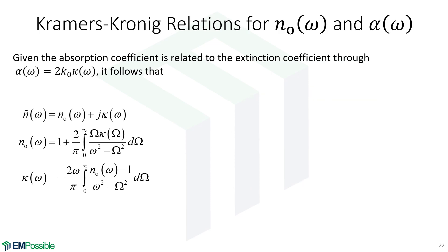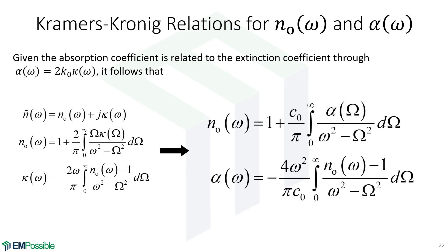What's more common when talking about refractive index is to relate it to the absorption coefficient rather than the extinction coefficient. The absorption coefficient is two times k-naught times the extinction coefficient. Taking the equations from our previous Kramers-Kronig relation, we can now relate the refractive index to our absorption coefficient. This is probably the most common form you'll see — if you search Kramers-Kronig relation for optics, that's the one that comes up.